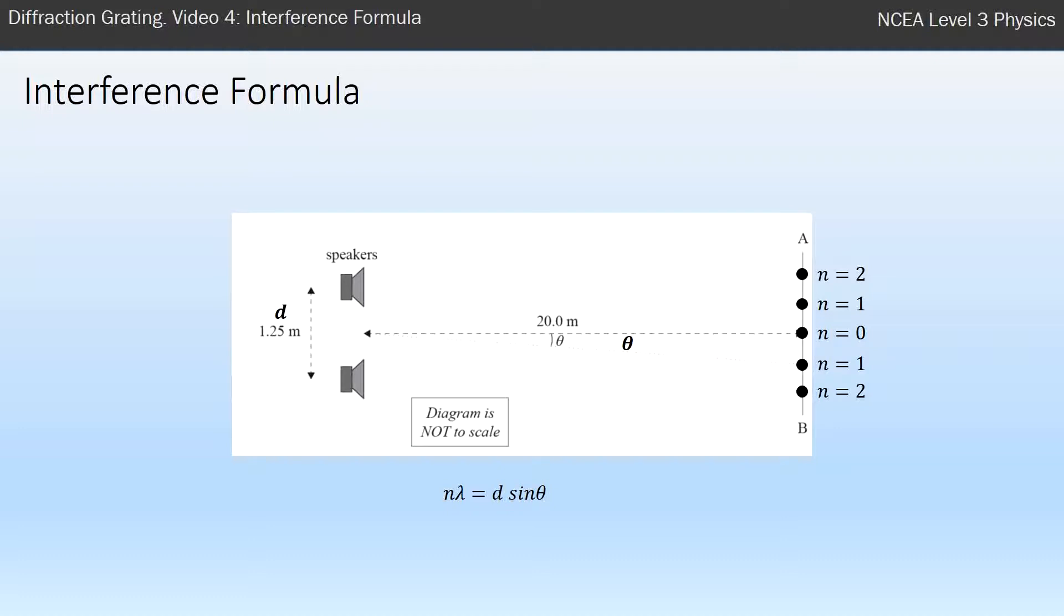So if you rearrange this formula to put D on one side, so I've divided both sides by D, and you have D very small, what it means is that sine theta and theta is going to get much bigger. So that formula shows you that for a diffraction grating with very small distance between slits you get a much more spread out interference pattern.